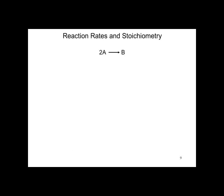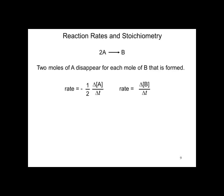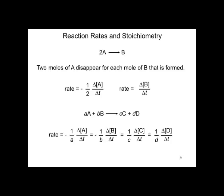Let's see how stoichiometry affects reaction rate. Two moles of A are converted to B. If two moles of A disappear for each mole of B, we have to account for the difference in the number of moles. For A, the rate is equal to minus one-half the concentration change of A over the change in time, and the rate for B is the change in concentration of B over the change in time. Notice that the coefficient two becomes one-half. In general, reactants are all negative expressions and products are positive expressions.